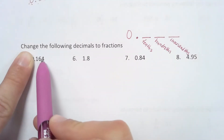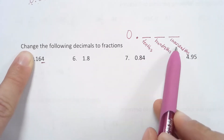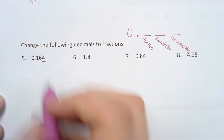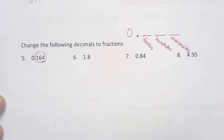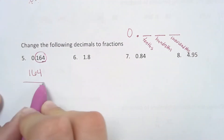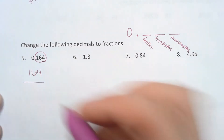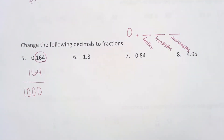Here, my four is in the one, two, third position — remember our third position is the thousandths place. So if I want to write this as a fraction, I am going to write the whole number I see behind the decimal point. So that 164 is going to be my numerator, and my denominator is going to be whatever place value that was in. Since the four was in the thousandths place, my fraction is going to be out of 1,000. So 0.164 as a fraction is 164 over 1,000.